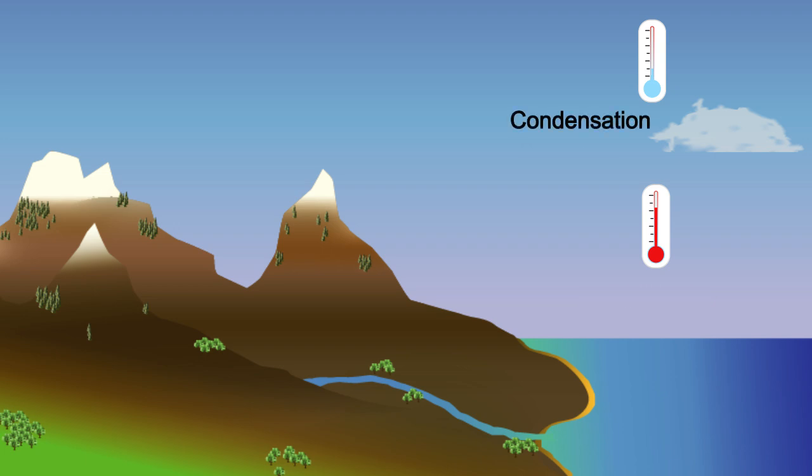We call this temperature the dew point. If it is colder than the dew point, water vapor will condense. This can be seen as a cloud.